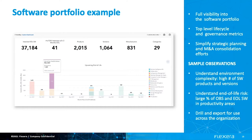Here we can see a holistic view of the entire software portfolio and how it relates to end of life. On the left, versions, manufacturers, categories, and products among other attributes are available to understand where complexity and risk exists in your environment and to establish high-level governance metrics. Some sample observations: there is a high number of software products and versions, and we can understand end-of-life risk by seeing that a large percentage of our end-of-life software is in productivity areas. From there we can drill down and export for use across the organization.